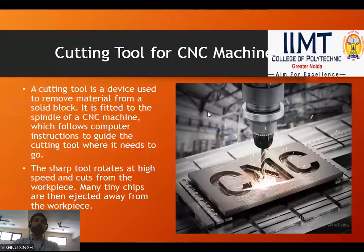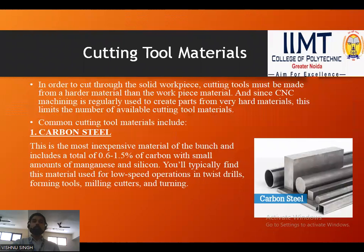A cutting tool is a device used to remove material from a solid block. It is fitted to the spindle of a CNC machine, which follows computer instructions to guide the cutting tool where it needs to go. The sharp tool rotates at high speed and cuts from the workpiece; many tiny chips are then ejected away from the workpiece.